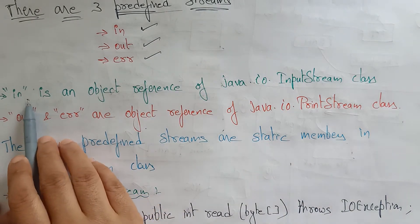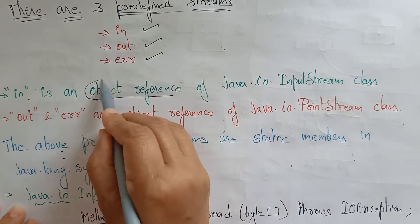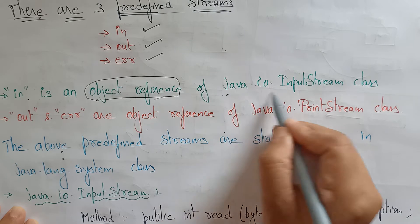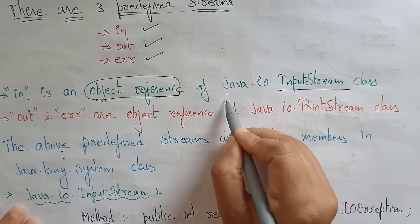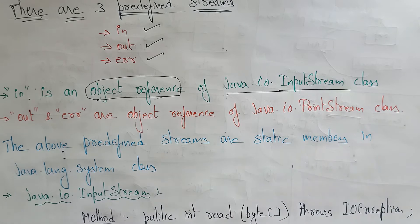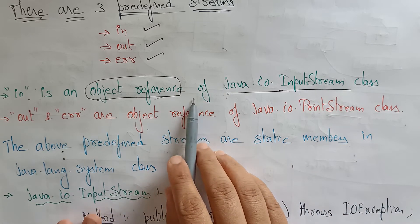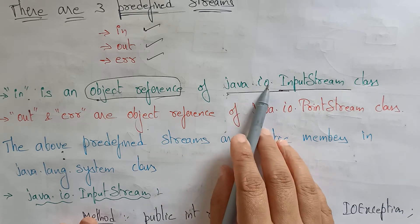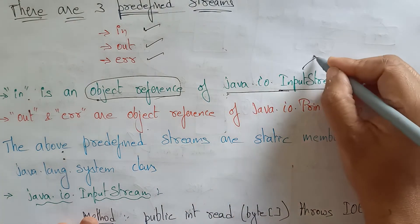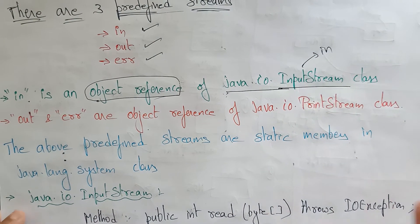What is 'in'? 'In' is an object reference — it is an object reference of the InputStream class, which is present in the java.io.InputStream class. So 'in' is a predefined stream used in the Java programming language, and it is an object reference of java.io.InputStream class.